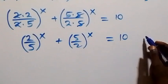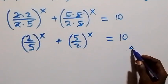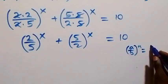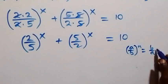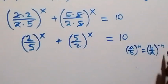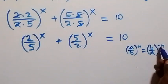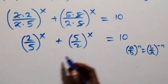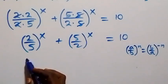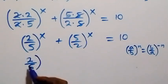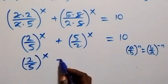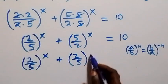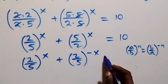Using the rule that (a over b) raised to power n can be rewritten as (b over a) raised to power minus n, we can interchange the second term. This gives us (2 over 5) all raised to power x, plus (2 over 5) all raised to power minus x, equals 10.